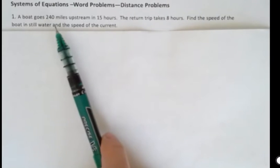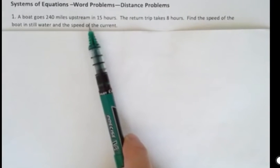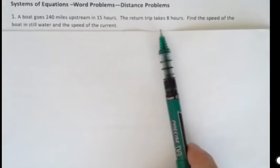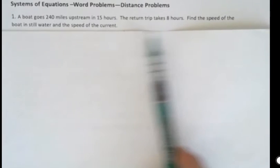Read the problem: A boat goes 240 miles upstream in 15 hours. The return trip takes eight hours. Find the speed of the boat in stillwater and the speed of the current.